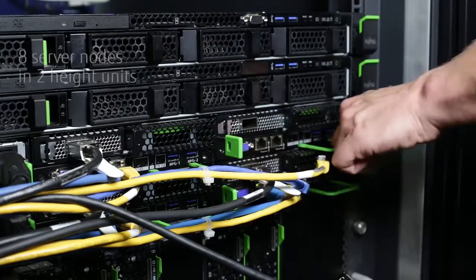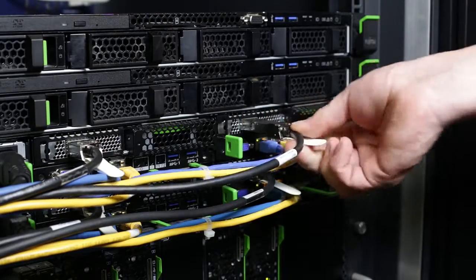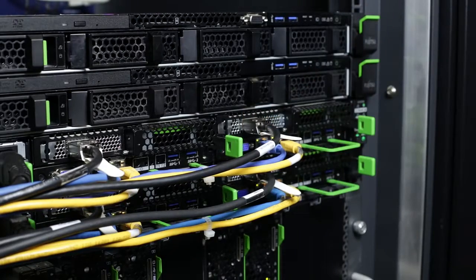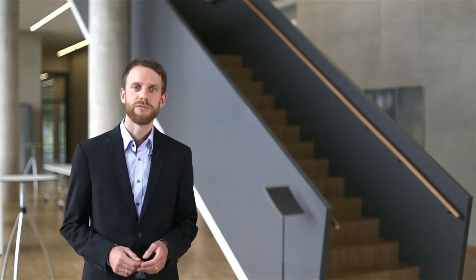One PrimaGZ X600 hosts 8 server nodes in just 2 height units for industry leading density. Depending on your datacenter infrastructure, you can choose between regular air cooling and highly efficient cool central liquid cooling.